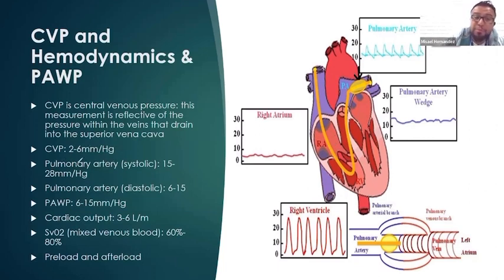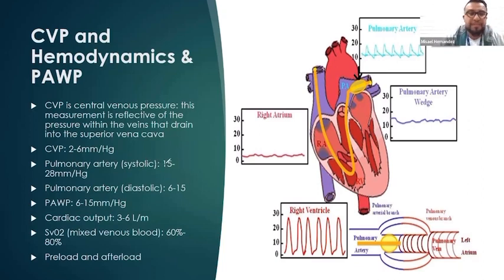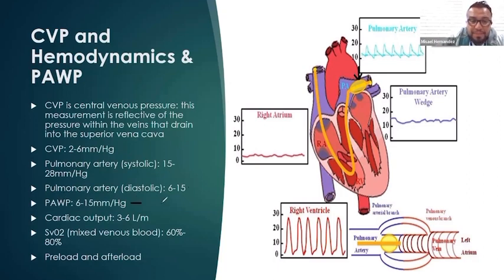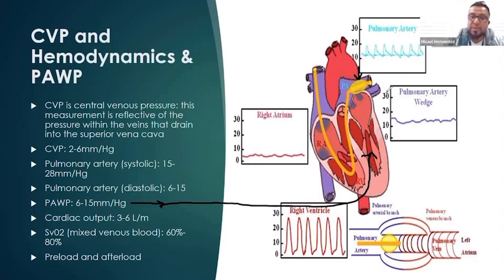We can also measure pulmonary artery pressure. According to ATI, pulmonary artery pressure during the systolic phase is 15 to 28 millimeters of mercury, and during the diastolic phase — because diastolic is relaxation — it's 6 to 15 millimeters of mercury. The pulmonary artery wedge pressure is indirectly measuring the pressure within the left ventricle. Even though it's in the pulmonary artery, this catheter indirectly measures left ventricular pressure, and it should be between 6 to 15 millimeters of mercury.